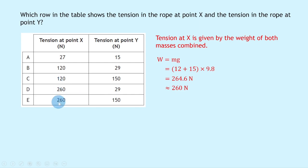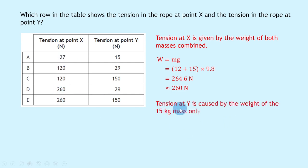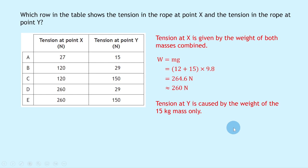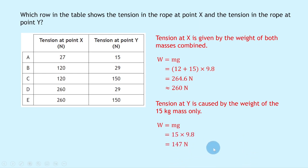The tension at Y is caused only by the 15 kg mass. W = mg = 15 × 9.8 = 147 N, which rounds to 150 N to two significant figures. So the answer is E.